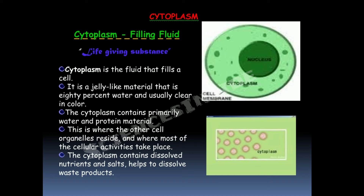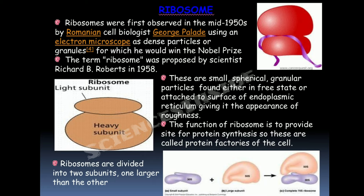Ribosomes were first observed in the mid-1950s by Romanian cell biologist George Palade using an electron microscope as dense particles or granules, for which he would win the Nobel Prize. The term ribosome was proposed by scientist Richard B. Roberts in 1958.